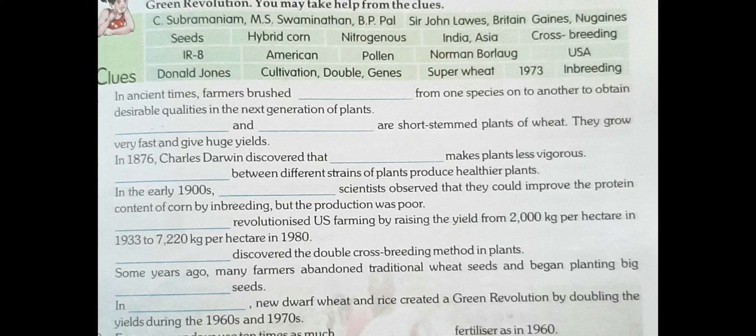Then come to question number 14. The Green Revolution in India was initiated — means started — by C. Subramaniam, M.S. Swaminathan, and B.P. Pal, with the import of 18,000 tons of dwarf wheat seed in 1966. These were the three personalities who initiated the Green Revolution in India.